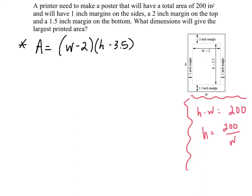Make sure you really focus on the equation that you're trying to maximize or minimize, the optimization equation. We want the largest printed area. The printed area is this piece inside here, w minus 2 multiplied by h minus 3.5. The constraint equation is important, but it's not what we're going to play with for most of the problem.